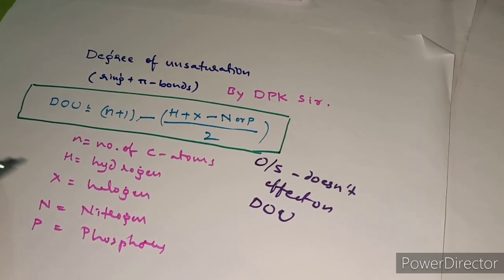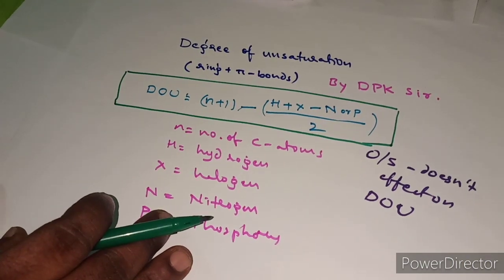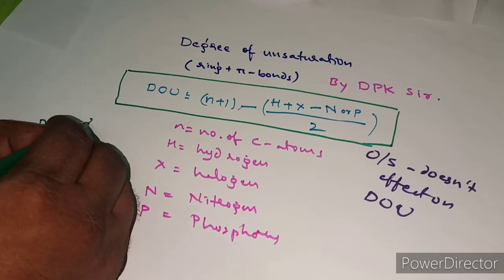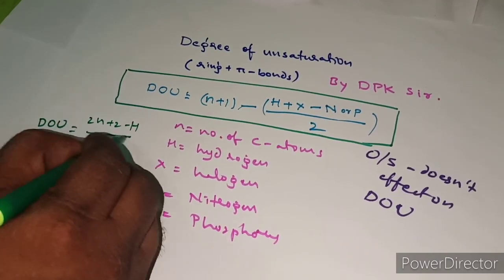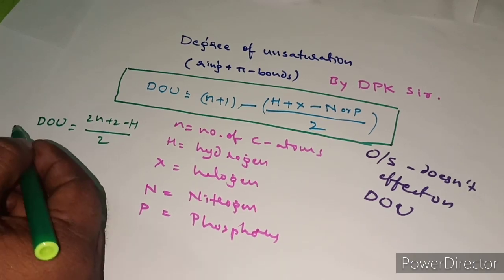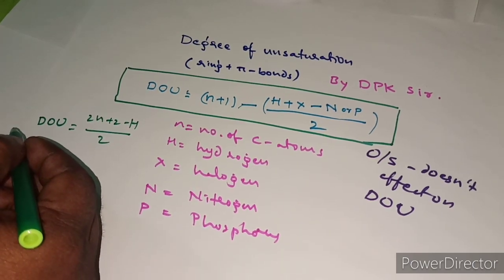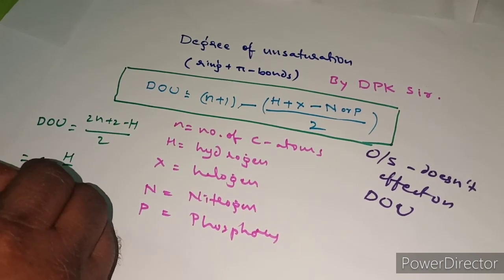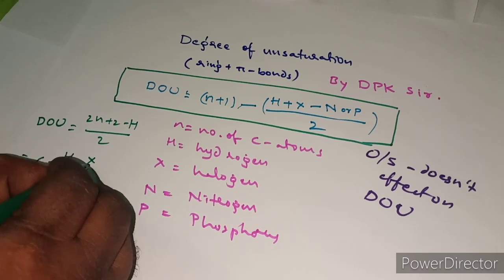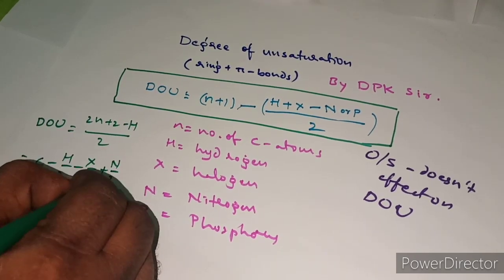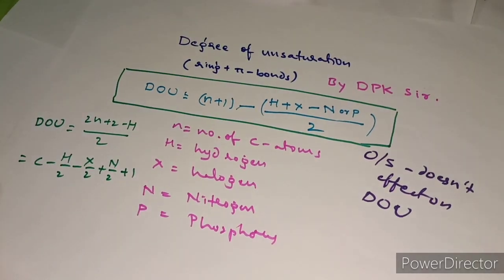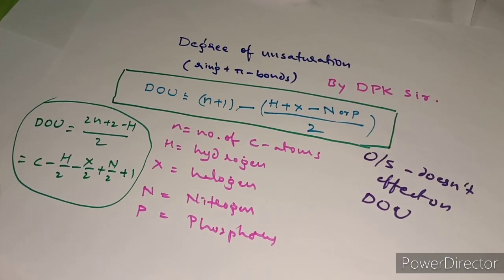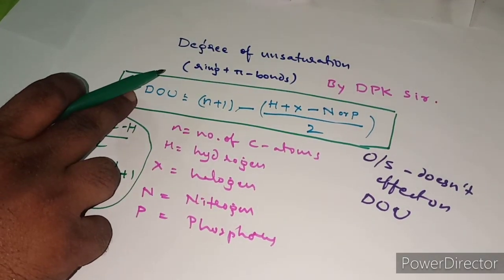For your knowledge, there are other formulas as well. One is: DOU = (2n + 2 − H) / 2. Another formula is: DOU = C − H/2 + N/2 − X/2 + 1. However, the simplest formula we will use to calculate the degree of unsaturation is the one we already noted.